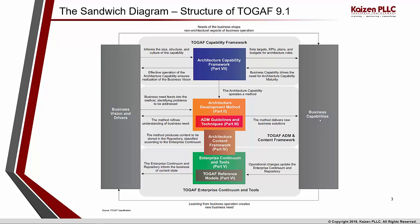As capabilities are made available, that drives the need for architecture capability maturity. An organization could be operating at a certain maturity level and wants to move from level 1 to level 2, level 2 to level 3, and so on. The capability framework provides guidance on how to manage this maturity and move between levels. Effective operation of the architecture capability ensures realization of business value. This is where you establish at what architectural capability level you want to operate at the enterprise level.